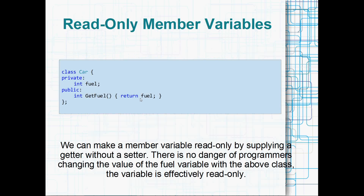Read-only member variables with getters: we can very easily make read-only member variables by supplying a getter with no setter. The fuel variable is private and the only public method gets the value — but you can't set it. Read-only member variables are really common, so use a getter if you like.